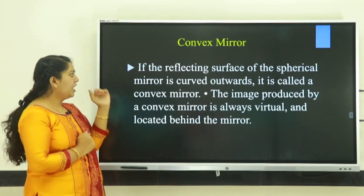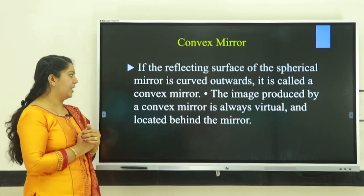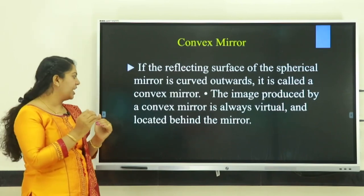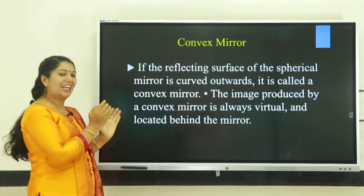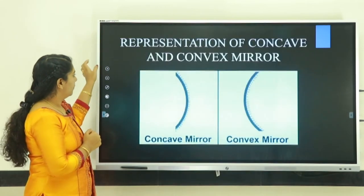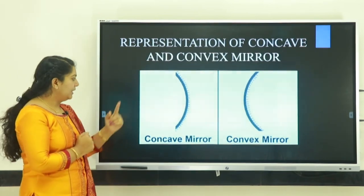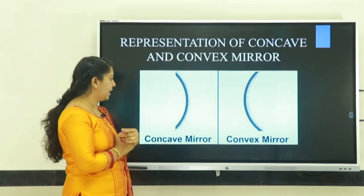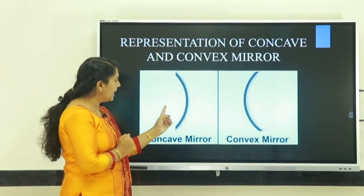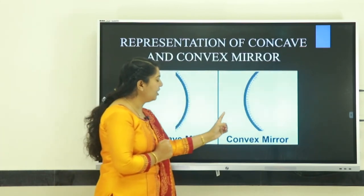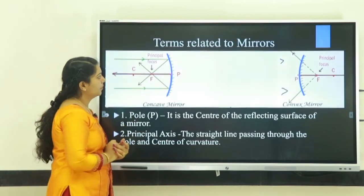Convex mirror: if the reflective surface of the spherical mirror is curved outwards, it is called a convex mirror. The image produced by a convex mirror is always virtual and erect, and it is always located behind the mirror. This is the way we can represent concave and convex mirrors — the first one is concave and the second one is convex.